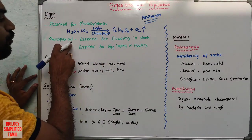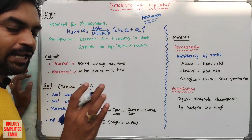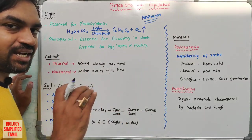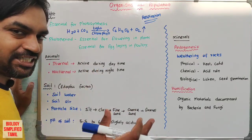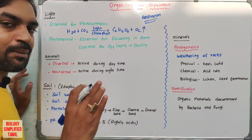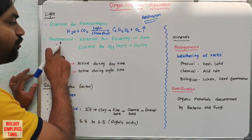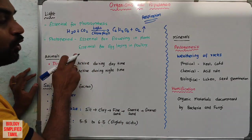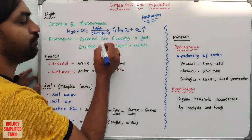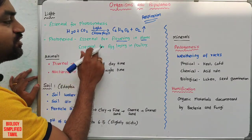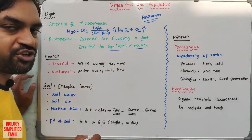Next, photoperiod. Photoperiod is the light and dark period in one day — 24 hours of light and night period. That is the photoperiod. It is essential for flowering in plants and for egg laying in poultry.